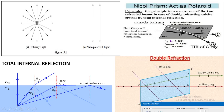The critical angle is the angle of incidence beyond which rays of light passing through a denser medium to the surface of a less dense medium are no longer refracted but totally reflected. Here, the O-ray part has a higher refractive index than Canada balsam, so the O-ray is totally internally reflected rather than refracted, and the E-ray is transmitted.